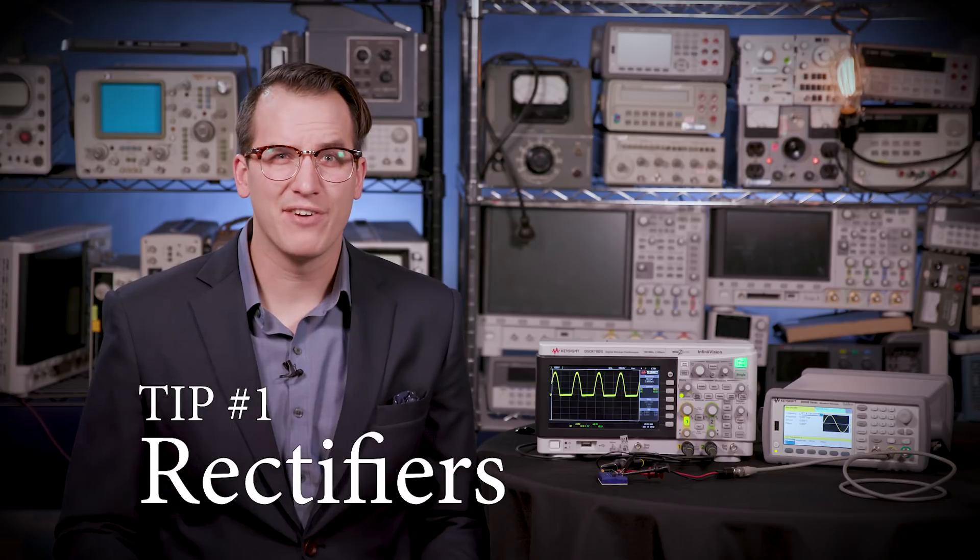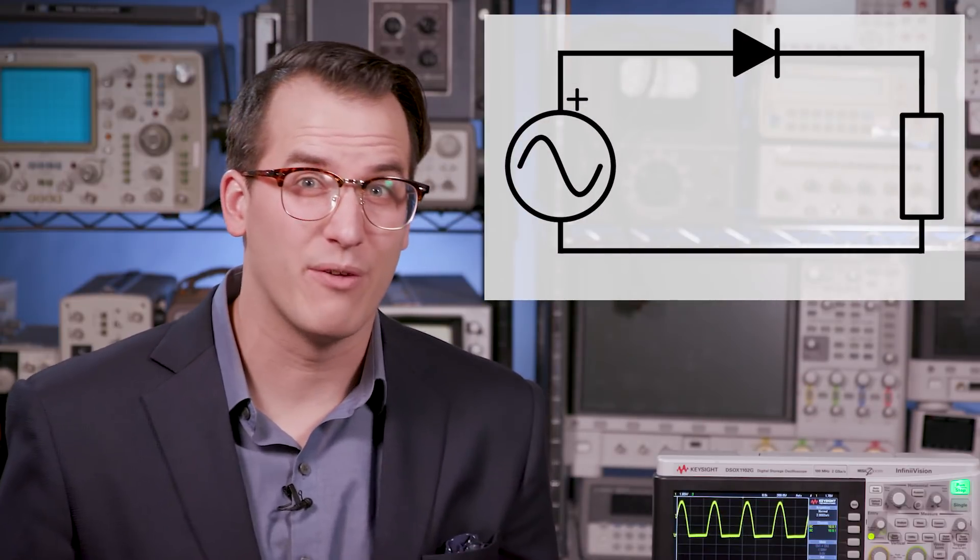Rectifiers. This has been covered ad nauseam by other channels, so I'm going to cover this quickly. The gist is that you can let through the positive voltages from an AC source, while blocking or inverting the negative ones. You can put together a halfway rectifier with a single diode.